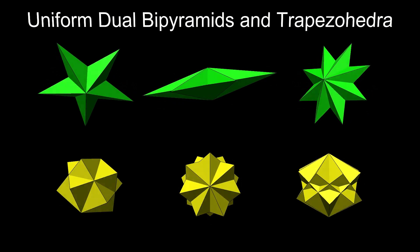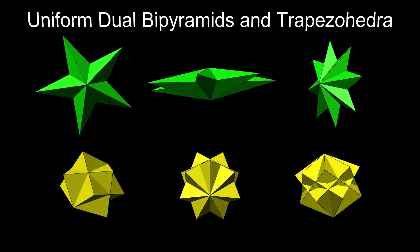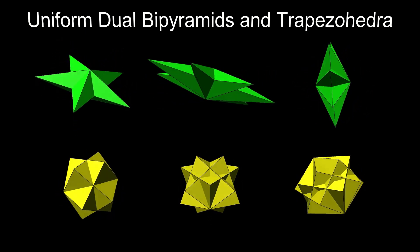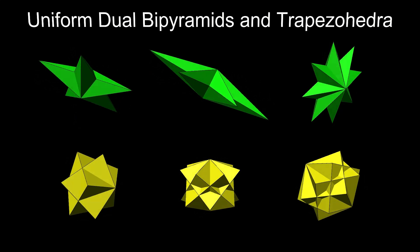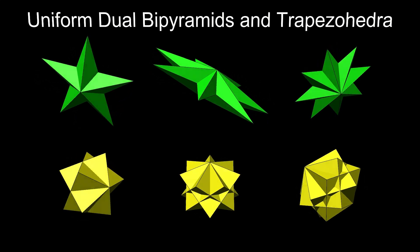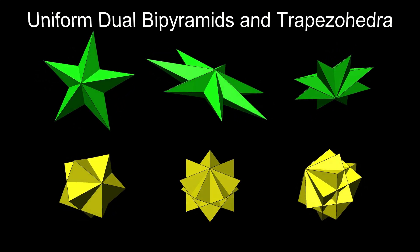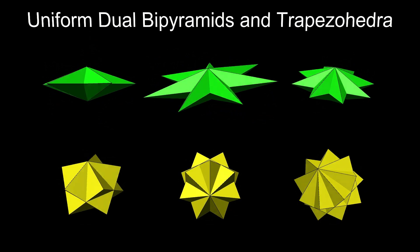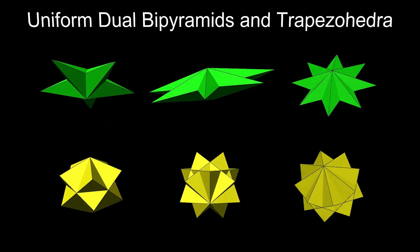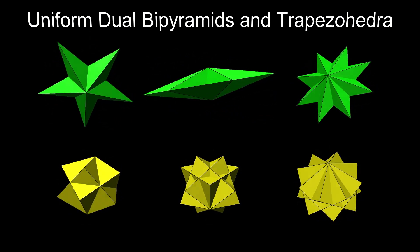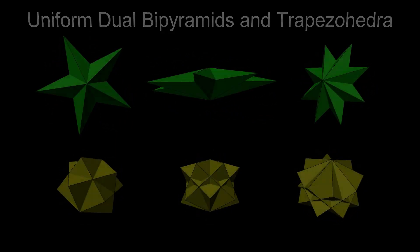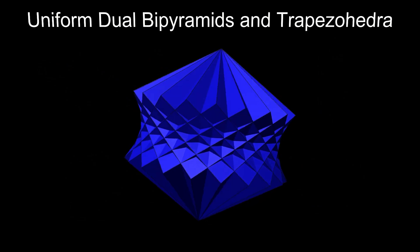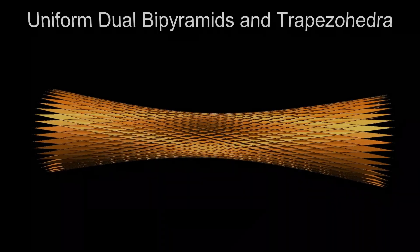This video covers the bipyramids and trapezohedra, which are the duals of the uniform prisms and antiprisms, focusing on the non-convex varieties. I'll be exploring these objects from the simple through the more complicated to the bizarre and spectacular.